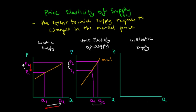The converse also holds. So if the price were to decrease from P2 to P1, producers will see fewer profit opportunities in this market and therefore decrease their supply from Q2 to Q1. For unit elasticity, the difference between P2 and P1 is the same as the difference between Q2 and Q1.